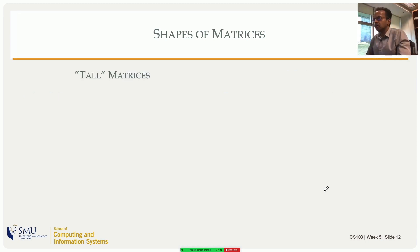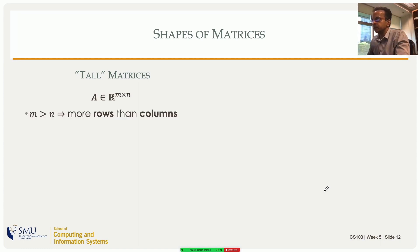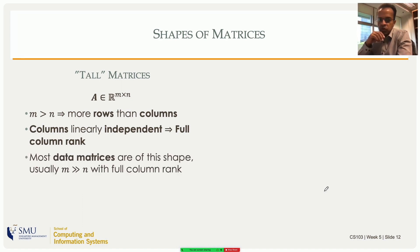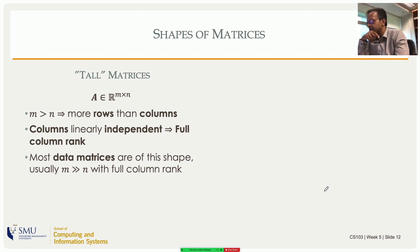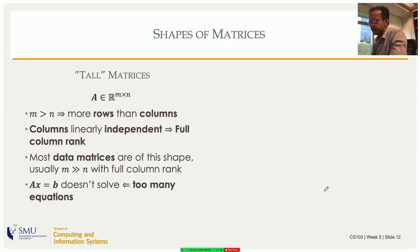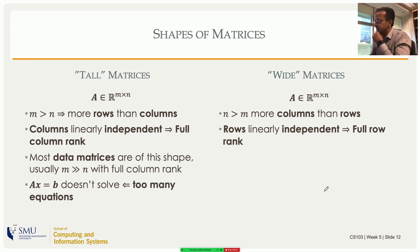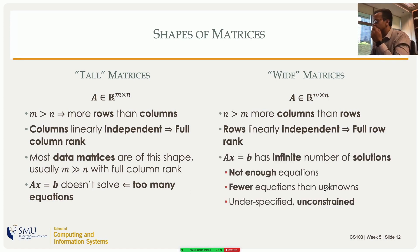Let's move on to shapes of matrices. A matrix is tall if it has more rows than columns: A ∈ R^(m×n) with m > n. If the columns are linearly independent — which is the case in most data science applications — we call it a full column rank matrix, and also simply full rank, because the maximum rank it can have is the number of columns and it achieves that. Most data matrices will have m much larger than n with full column rank. If you think of such a matrix as encoding a system of linear equations, you have too many equations and cannot solve exactly, but you may ask for the best possible solution.